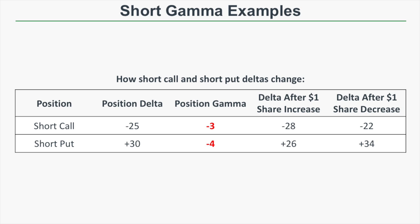For a short put: the initial position delta is plus 30 and the position gamma is negative 4. If the stock price increases by one dollar, the new position delta is plus 26. If the stock price decreases by one dollar, the position delta increases to plus 34. This tells us that if you have a short call and the stock price increases, your delta gets more and more negative. With a short put as the stock price decreases, your delta gets more and more positive — negative gamma is a risk to all short option traders.